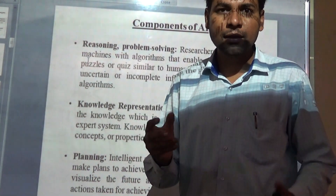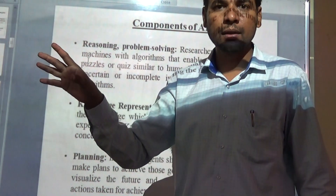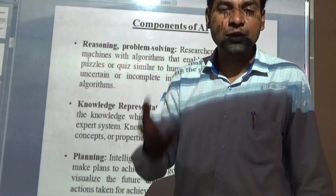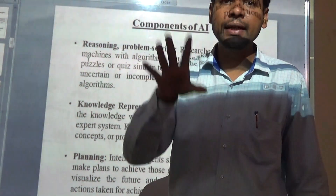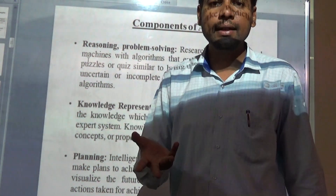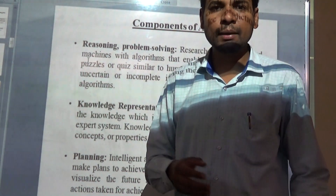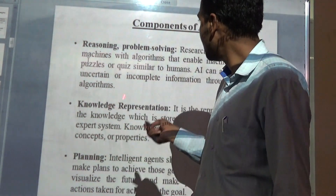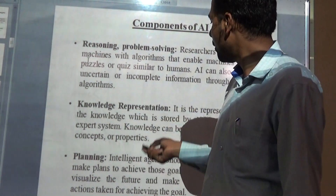What knowledge? Knowledge about that problem, knowledge about the resources, and knowledge about the obstacles. If everything is fed into the machine, then and only then it can solve that problem. So knowledge representation is one very important component of AI.